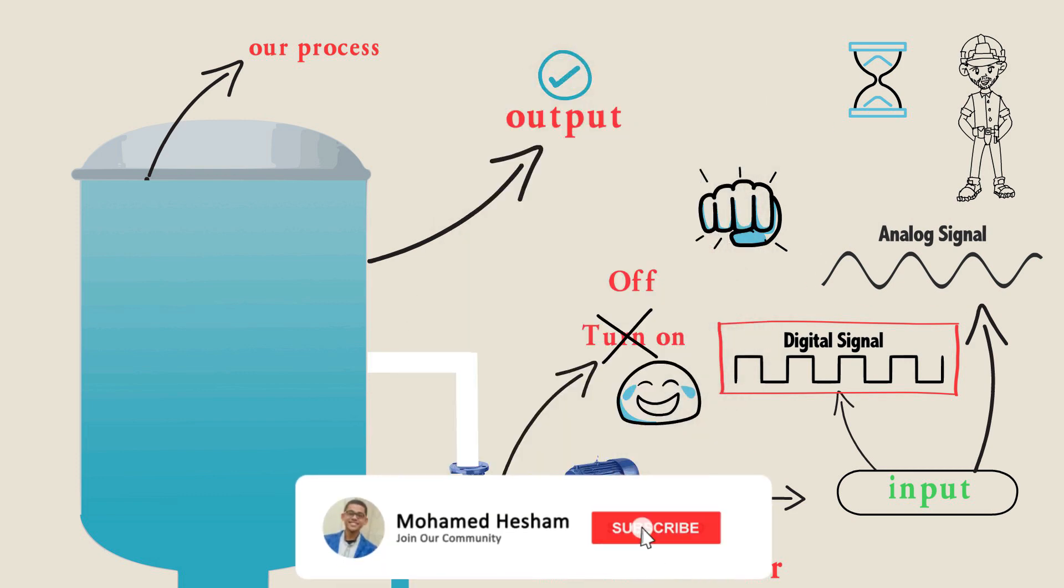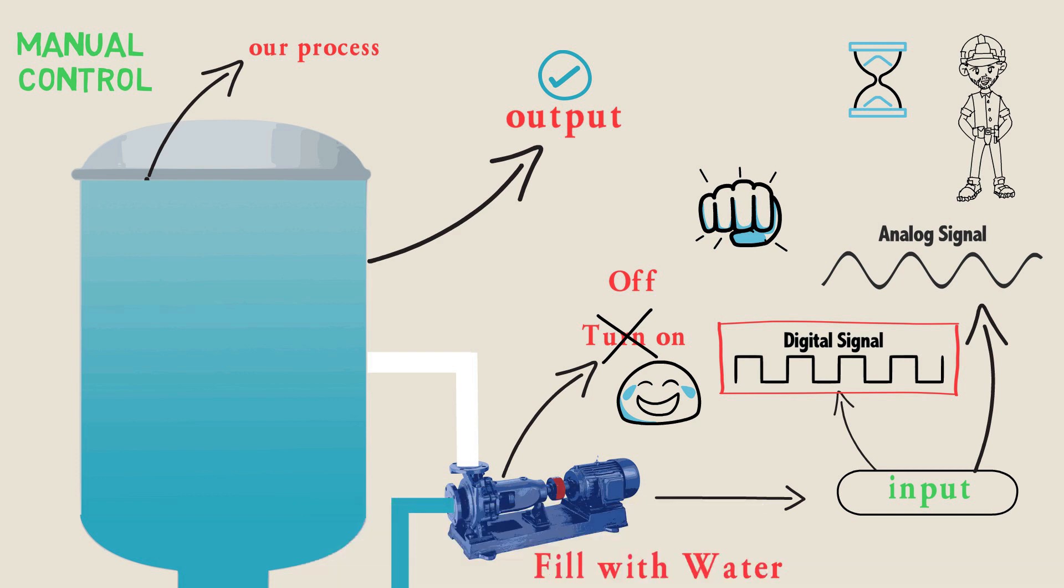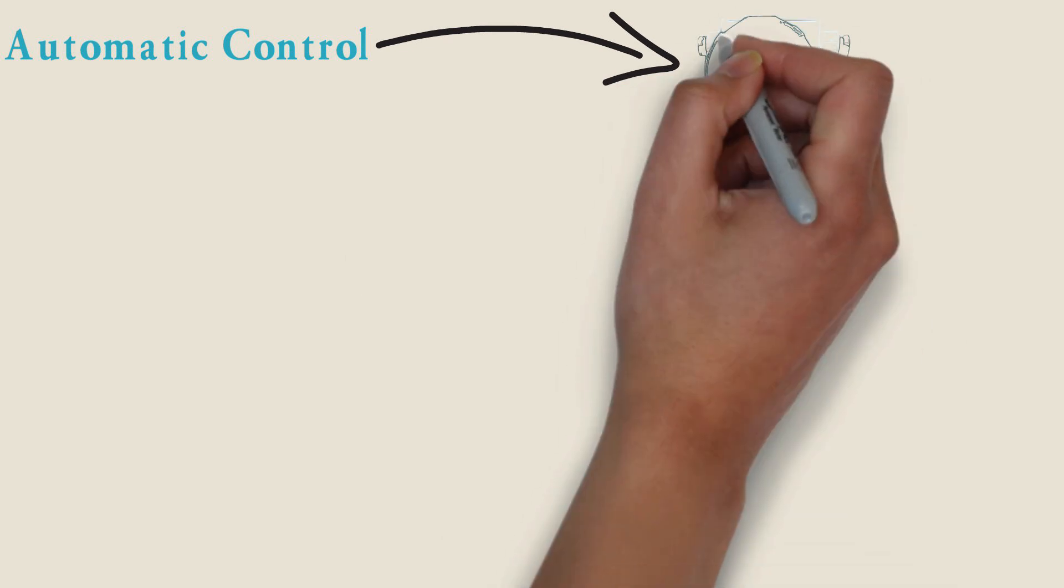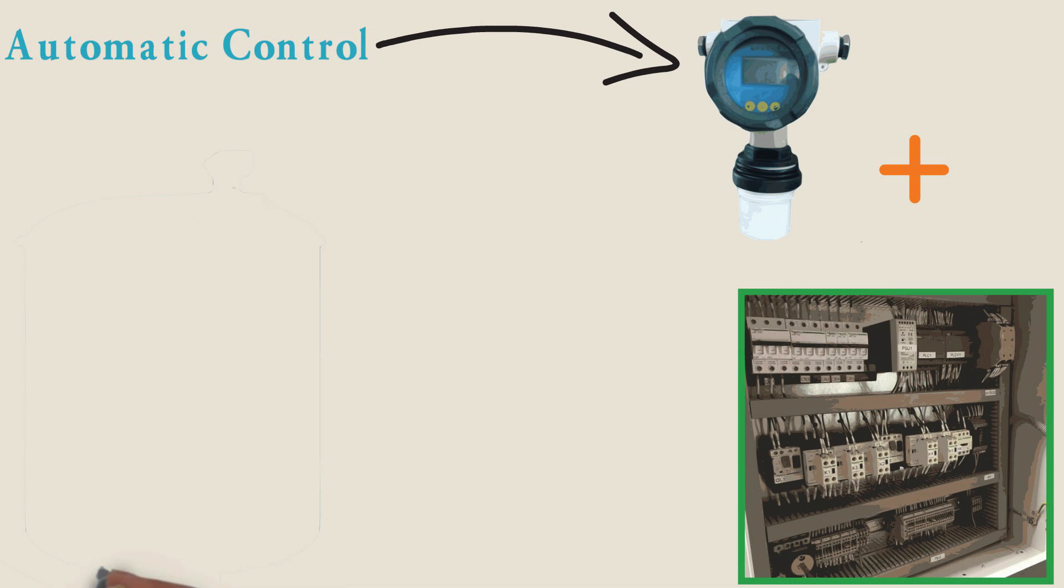Control system here could be either manual control as we have seen or automatic control. Automatic control can be done by providing ultrasonic level sensor and control circuit. Let's see how it works.